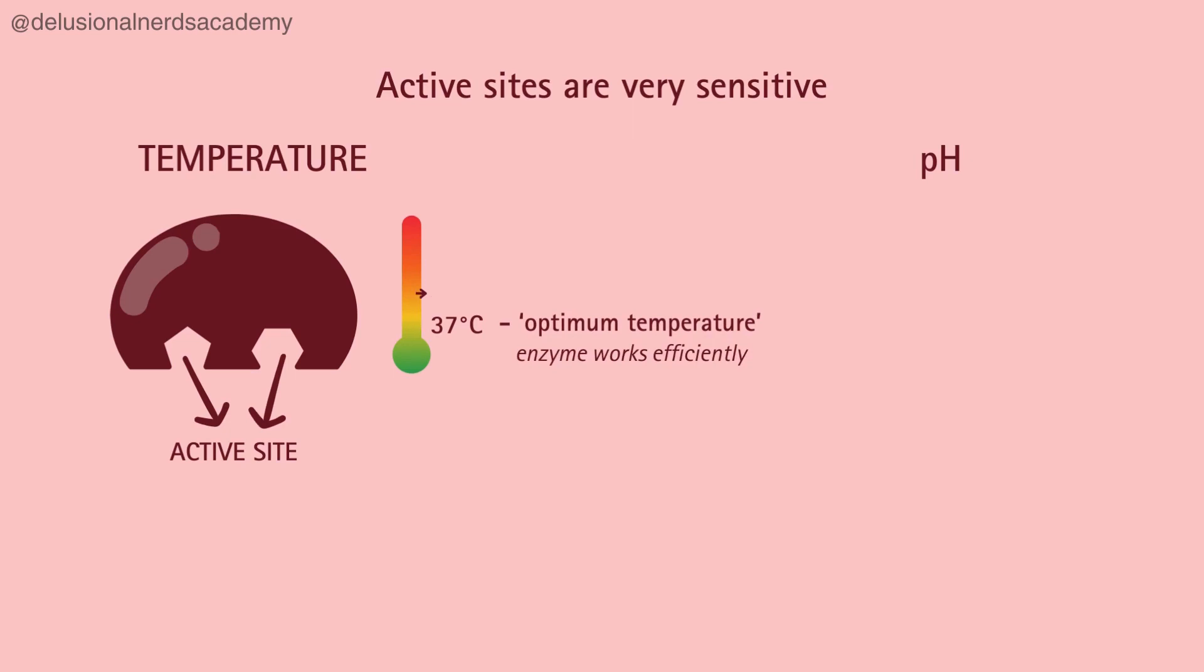As the temperature rises, the activity of an enzyme slows down. At around 60 degrees Celsius, the enzyme denatures, which means its structure gets messed up due to the high temperature, making it unable to function anymore.